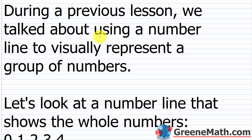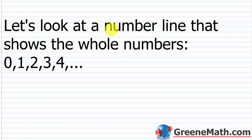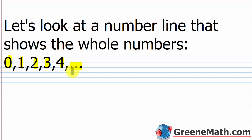During a previous lesson, we talked about using a number line to visually represent a group of numbers. The whole numbers are a group of numbers that start with zero — zero is your smallest whole number — and then they increase in increments of one. So after zero you get one, then two, then three, then four, and this continues forever. When you see the three dots, it means the pattern of increasing in increments of one is going to continue forever.